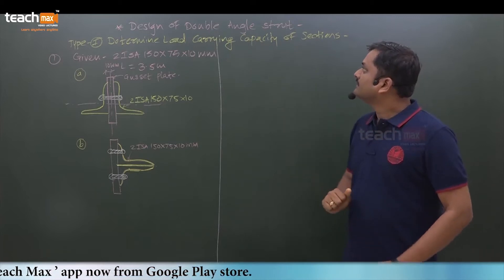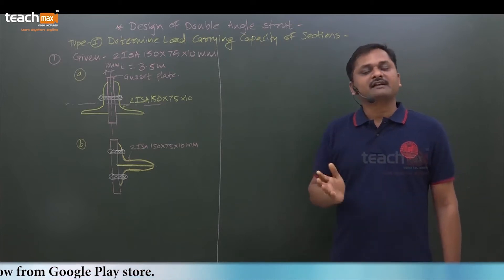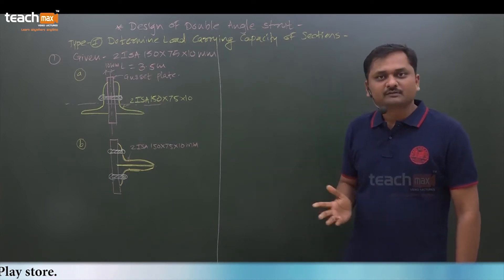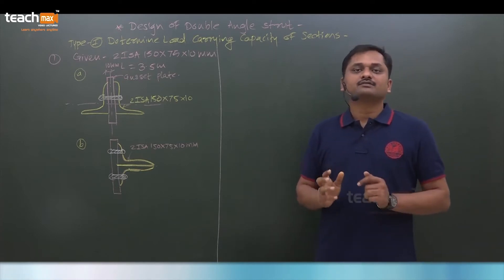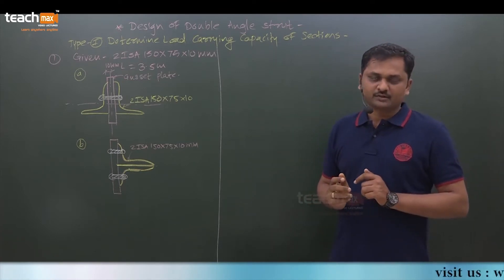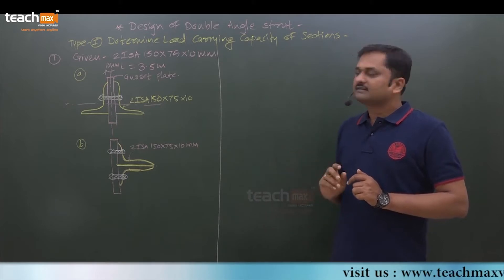Double angle strut members means angles are used either on one side of the gusset, or angles are used back to back to the gusset. So, double angle sections.